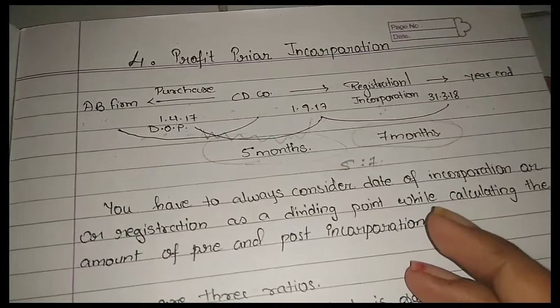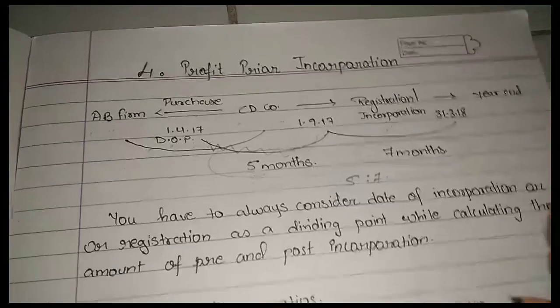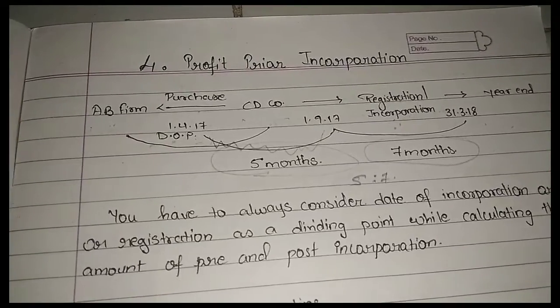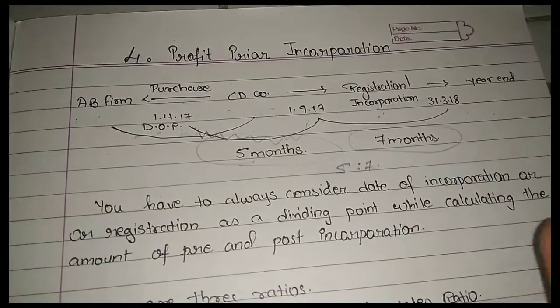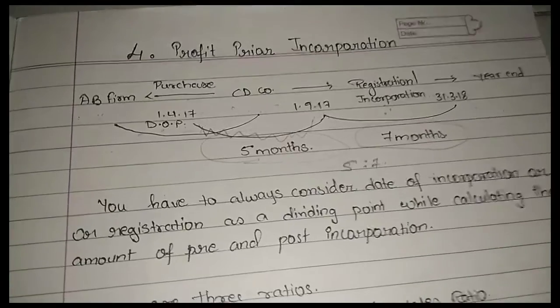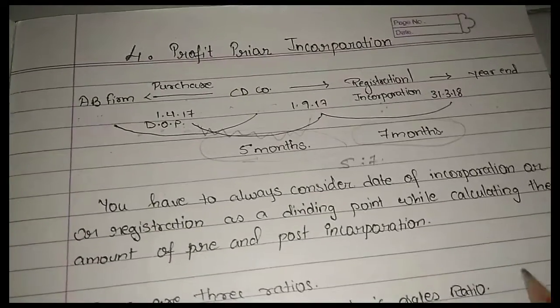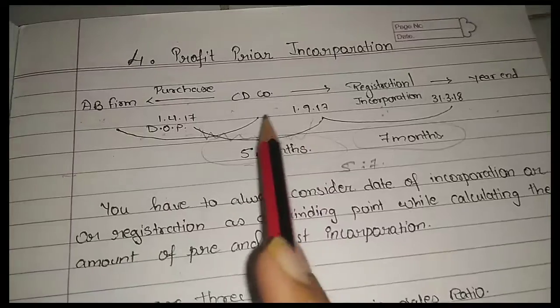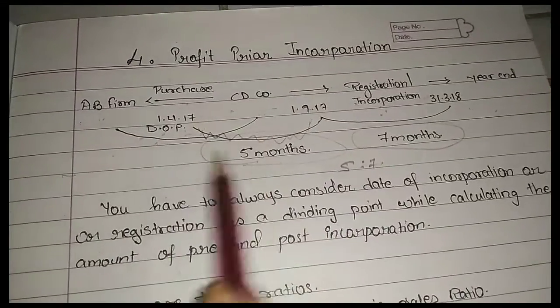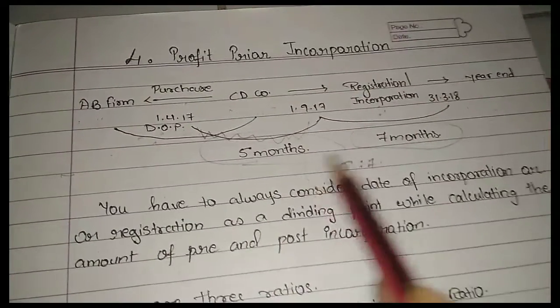So this is a ratio, 5 to 7 time ratio. Now you can do any calculation. Like you said that you have 29 lakh profit, you have 29 lakh profit or expense.